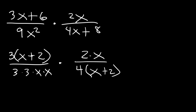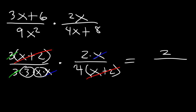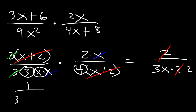Now let's see what we can cancel. We can cancel (x + 2), an x, and a 3. We're left with a 2 on top. On the bottom we have x, 3, and 4. I'll replace 4 with 2 times 2 so I can cancel a 2. Now I have 1 divided by 3x times 2, and 3x times 2 is 6x. So the final answer is 1 divided by 6x.